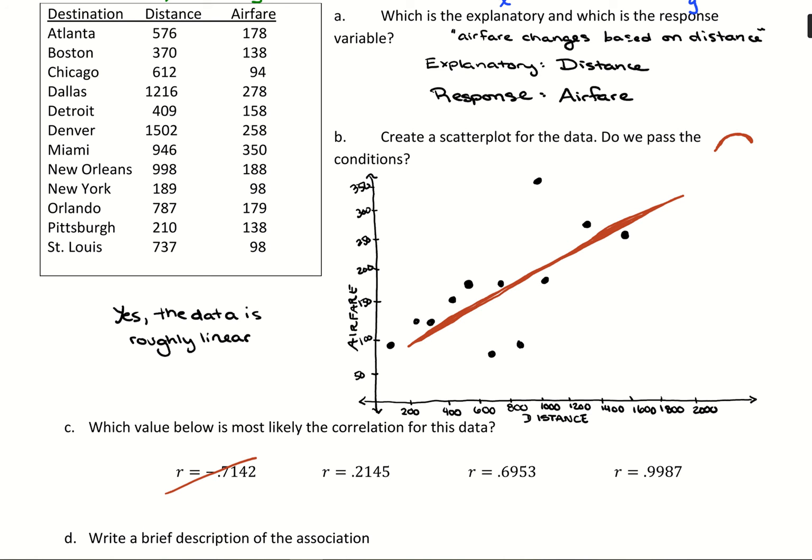Then it's a matter of weak, moderate, or strong. That R equals 0.9987 is so close to 1 - our data would have to appear very linear for that, and we don't have that. There's a decent amount of spread. That 0.2145 would look very scattered. The fact that I could start to put the line together makes it not weak. So this R equals 0.6953 is likely our correlation for this data.